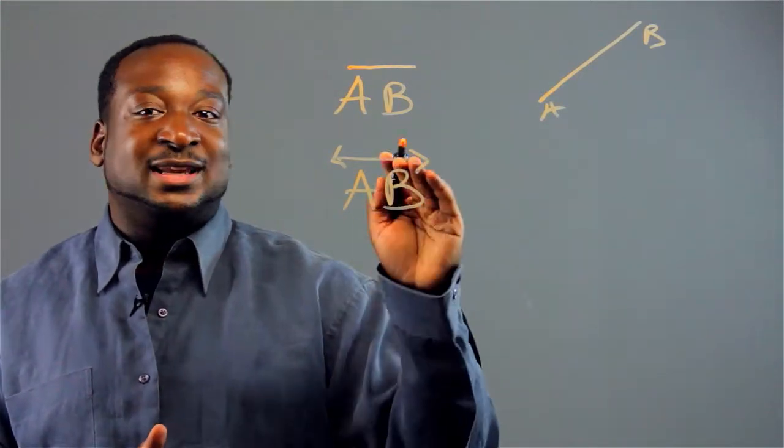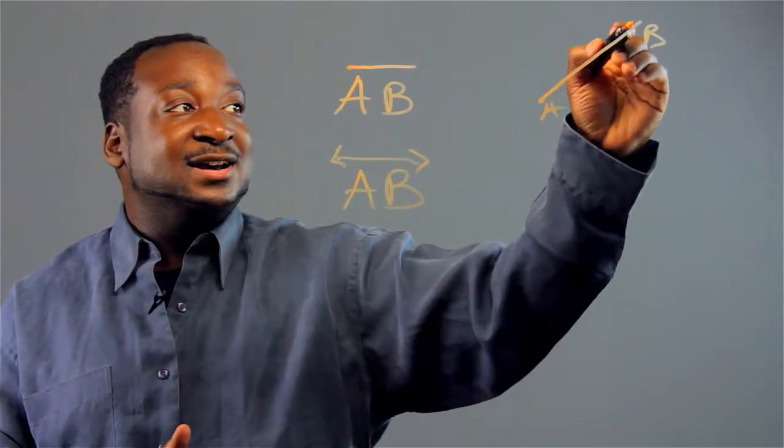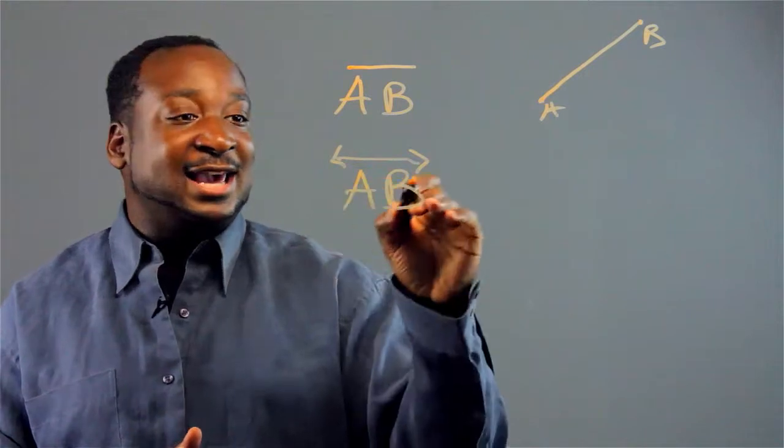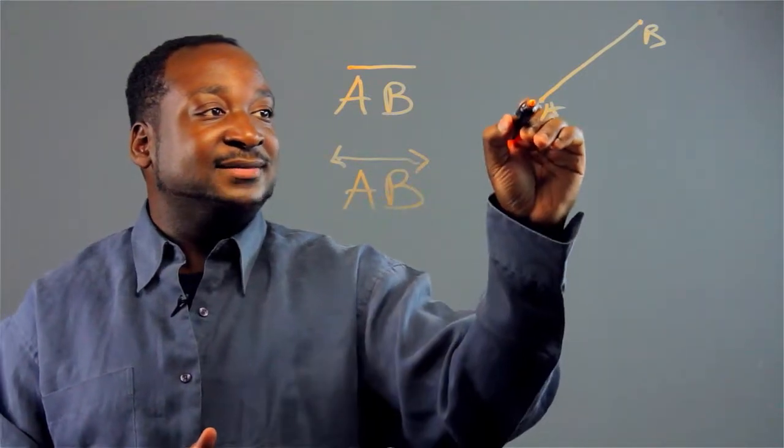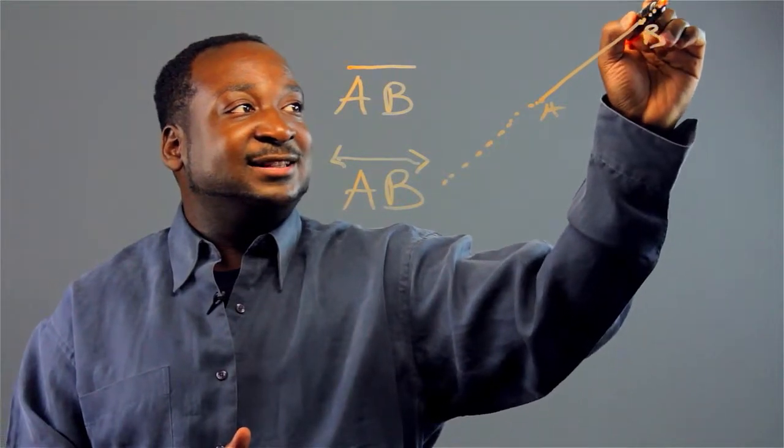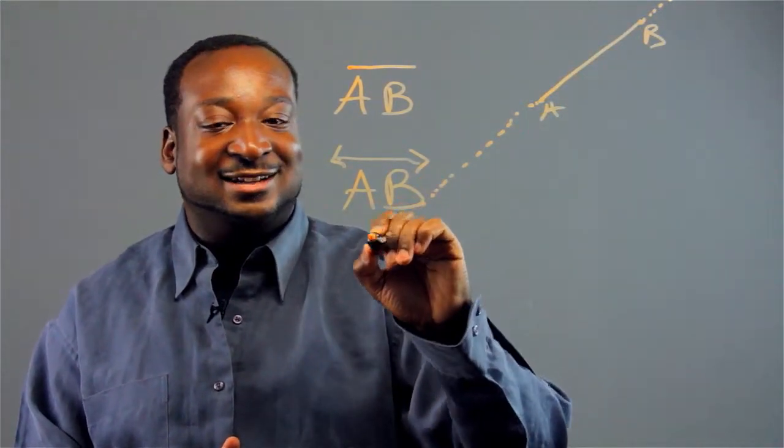Basically, what a line segment is, is a segment of an actual line, just a small portion. But the line AB, which is this right here, it would look like this. It's basically going way off into infinity. Lines are infinite.